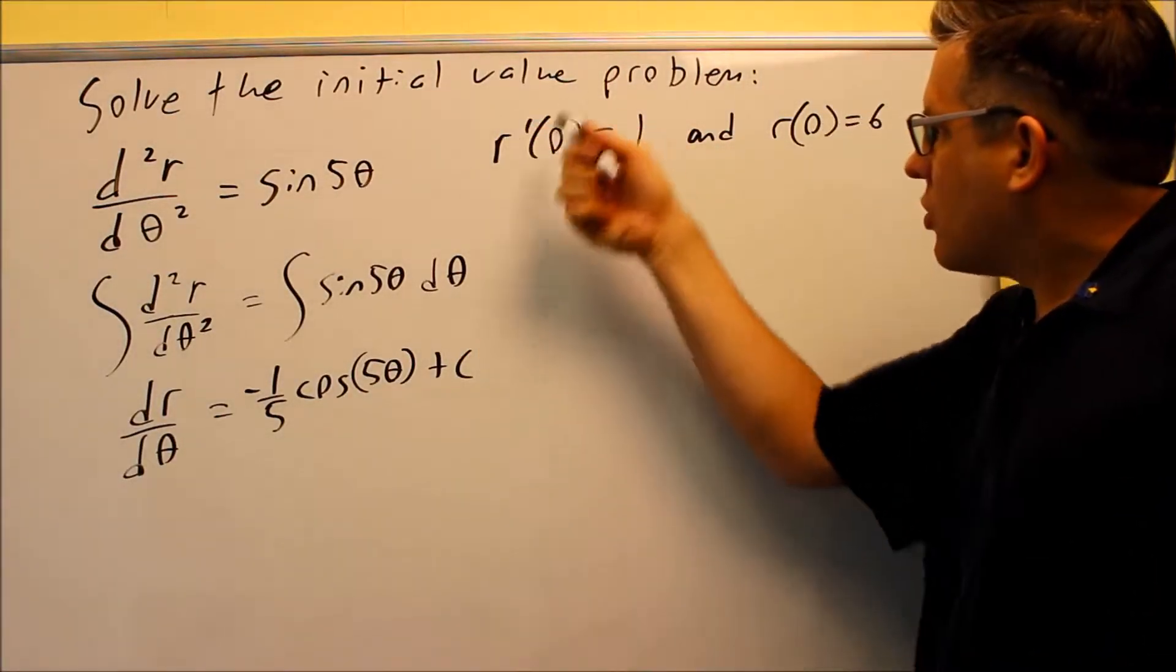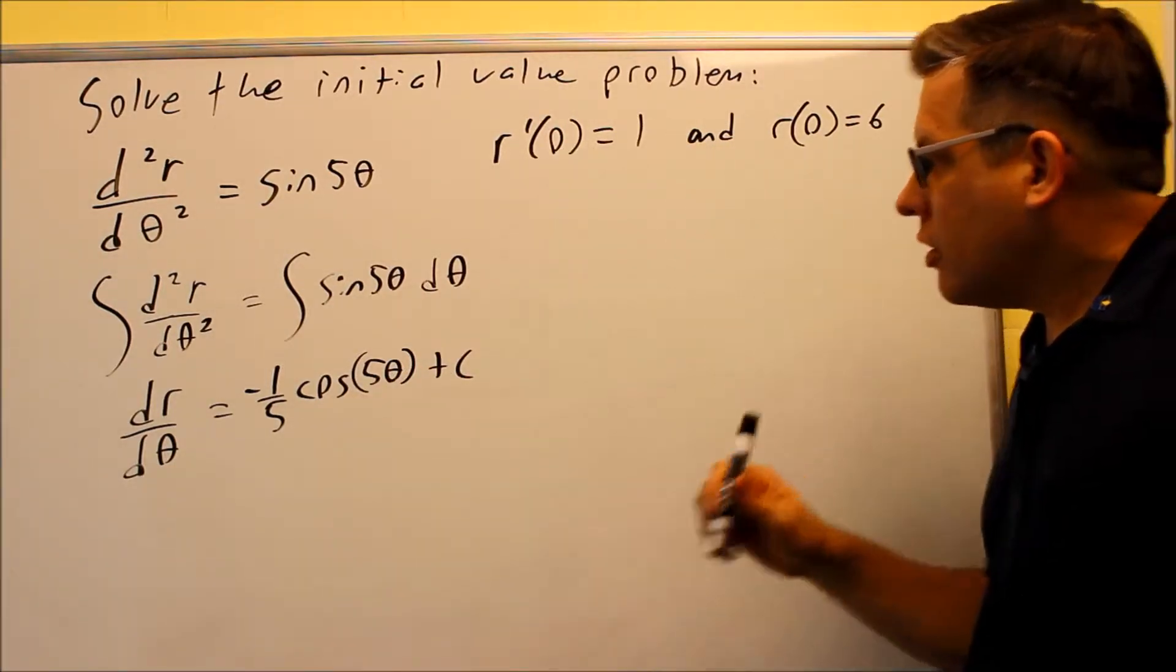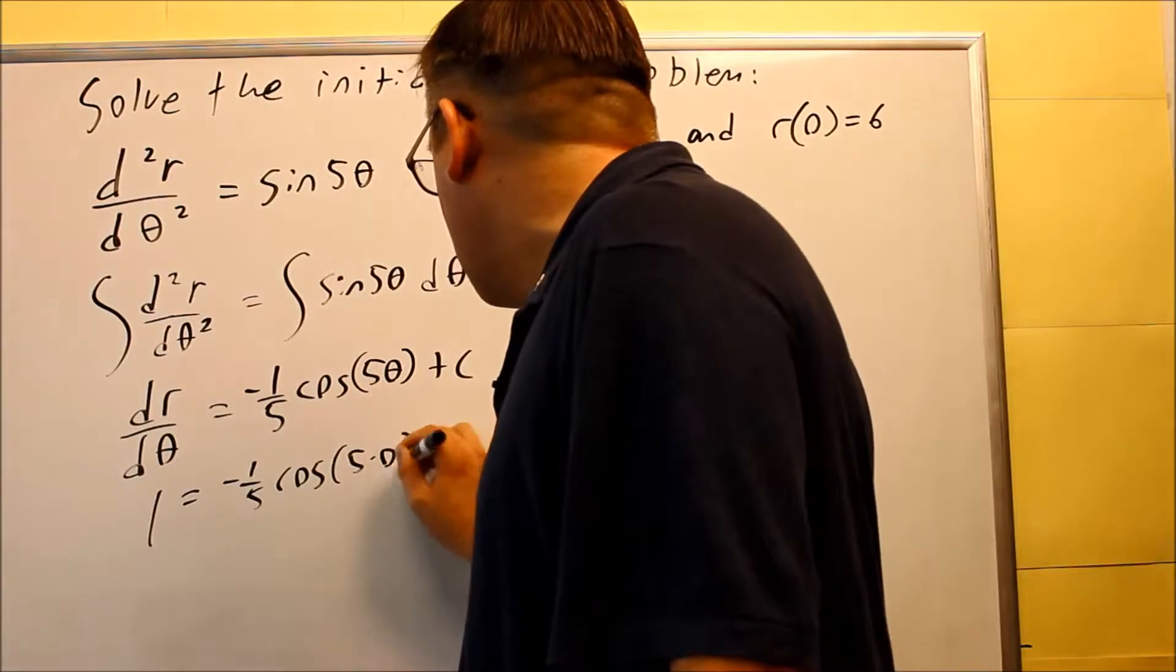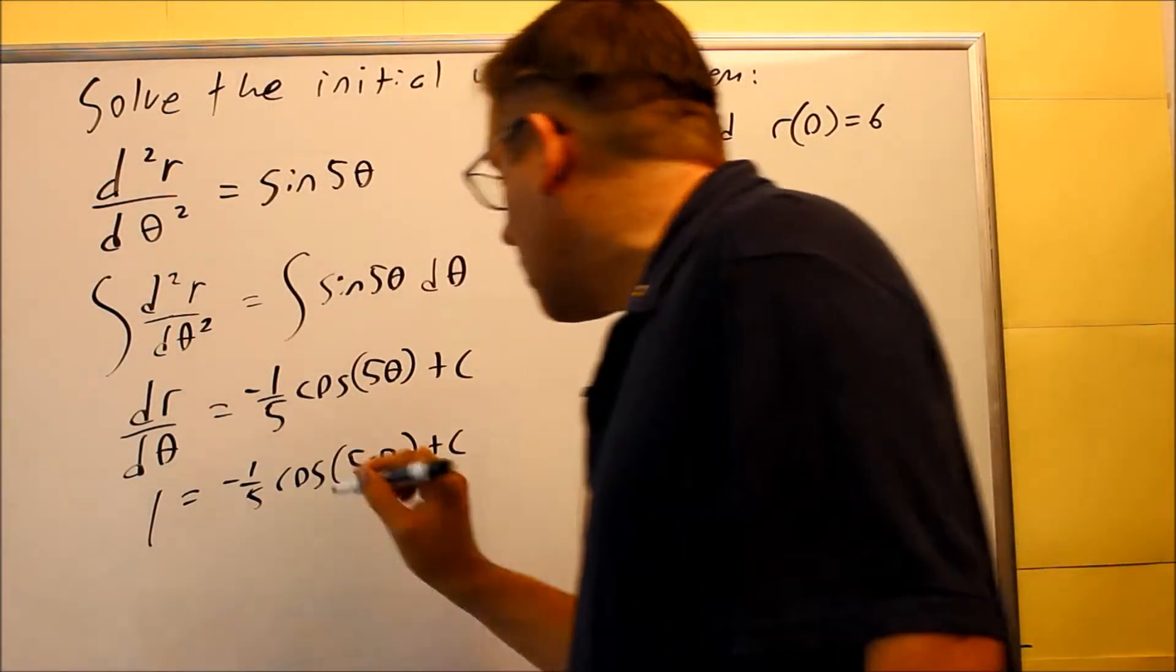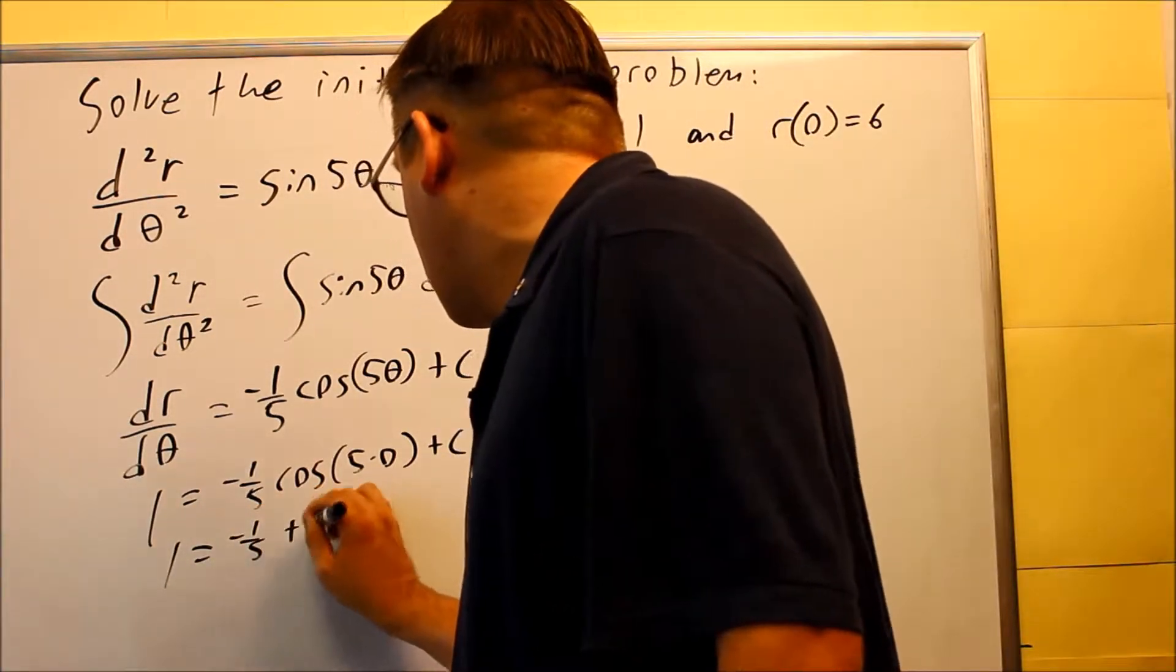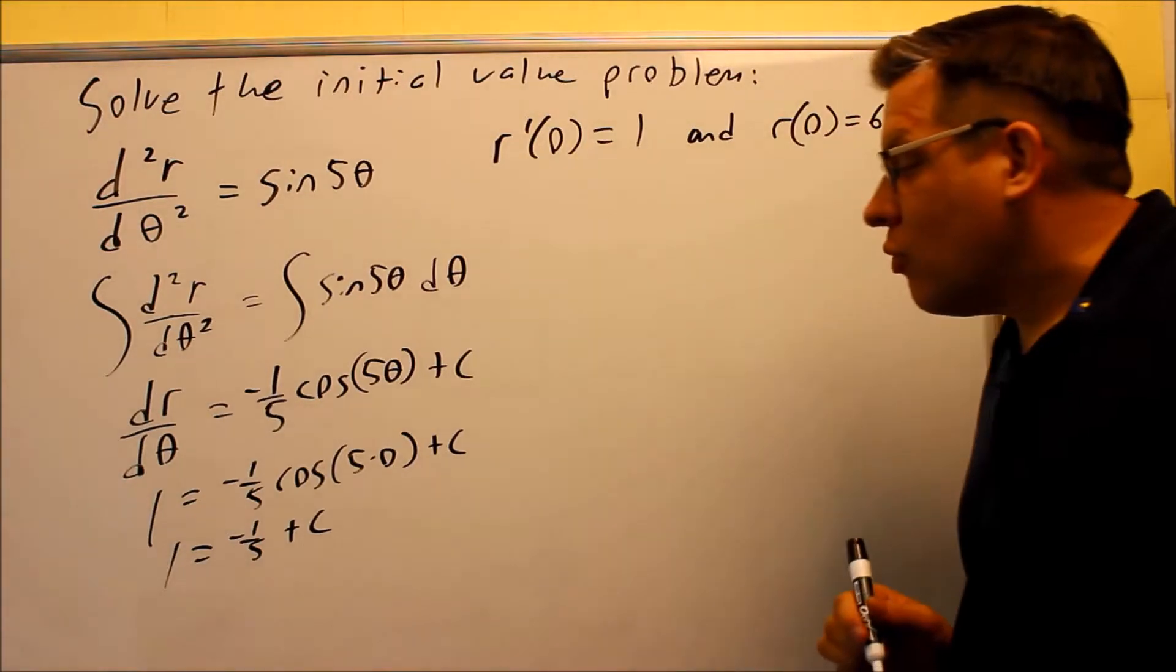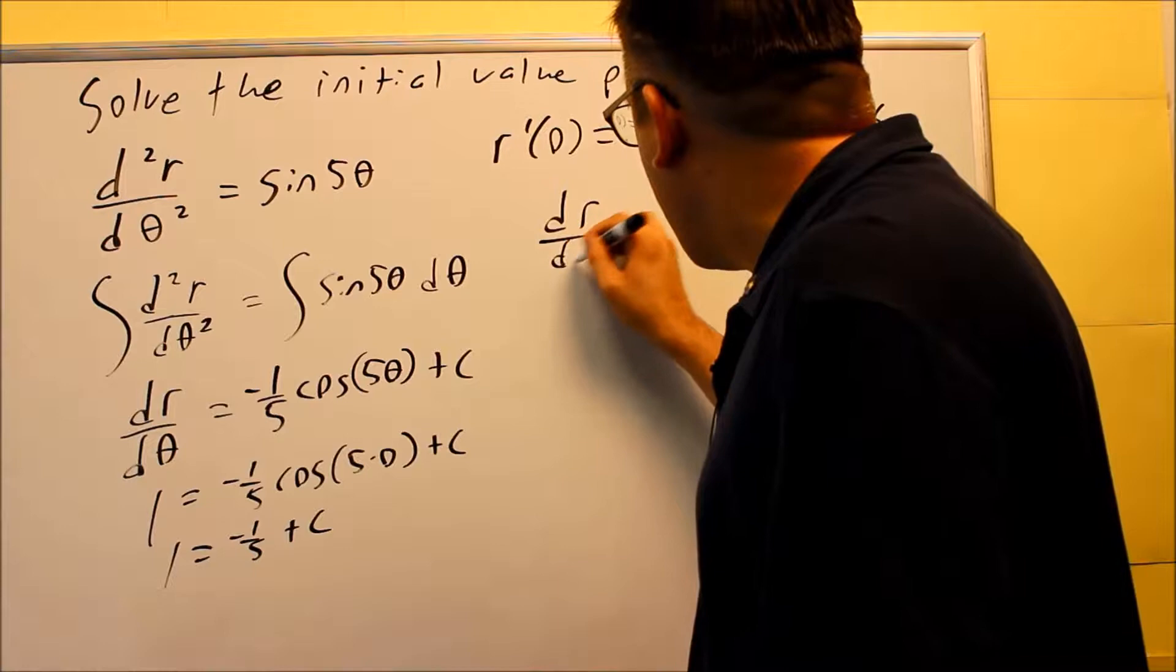We're going to use this information to plug in to find the c value. r'(0), so 1 is going to go on the left-hand side. And then I have cosine of 5 times 0 plus c. So what will happen there is cosine of 0 is 1. So I get 1 equals negative 1/5 plus c. If I add the 1/5 to both sides, I'll get 1 and 1/5, which is the same thing as 6/5.